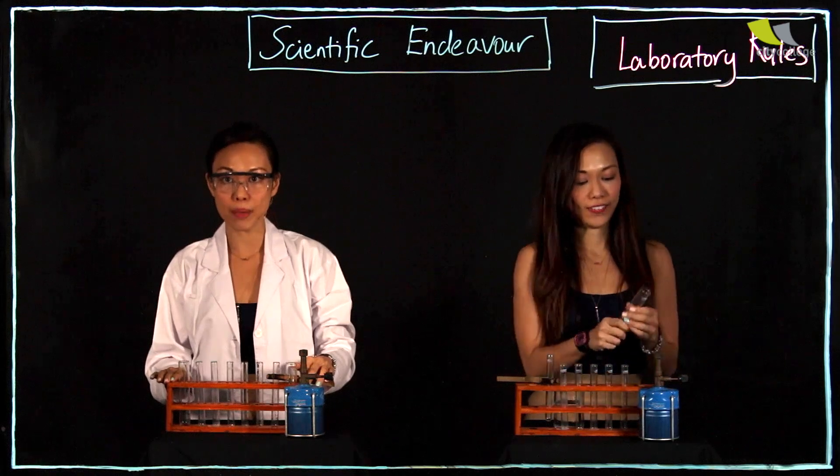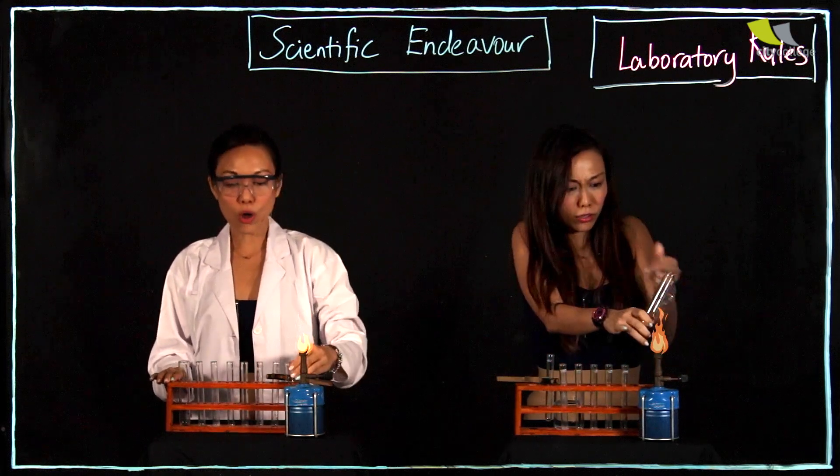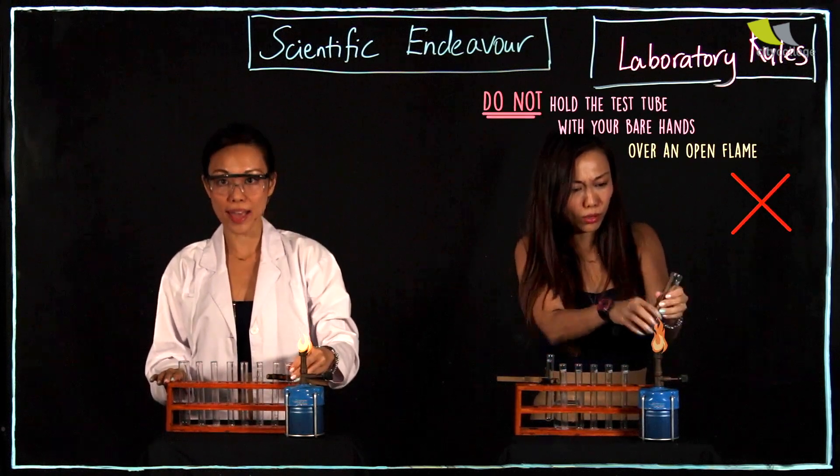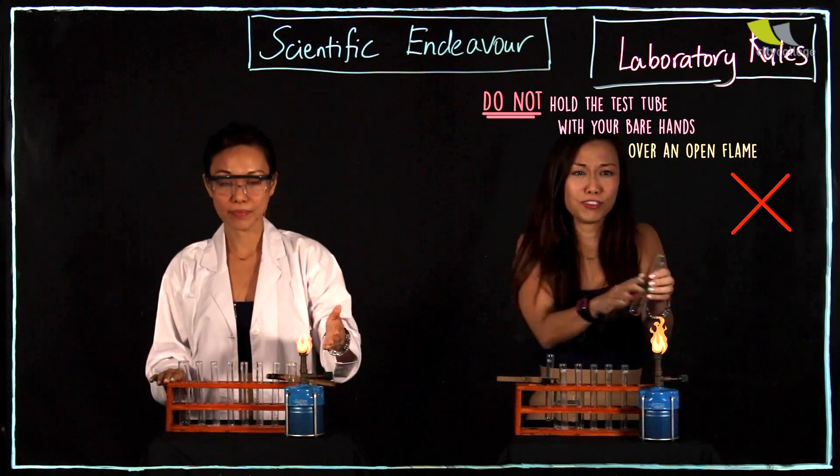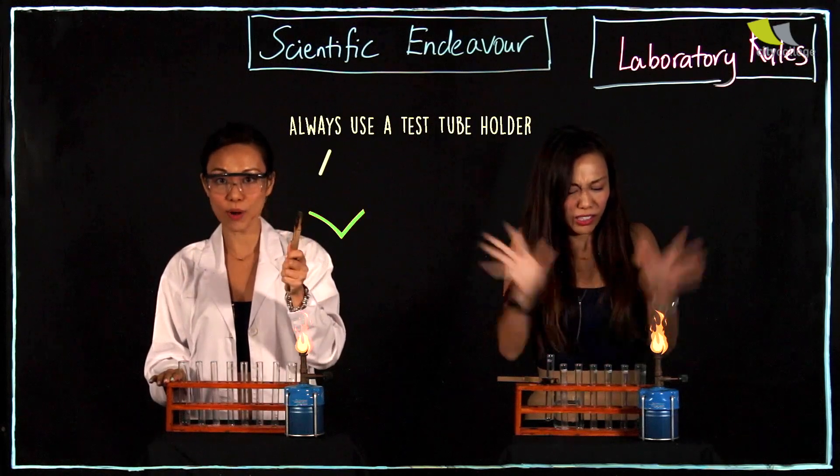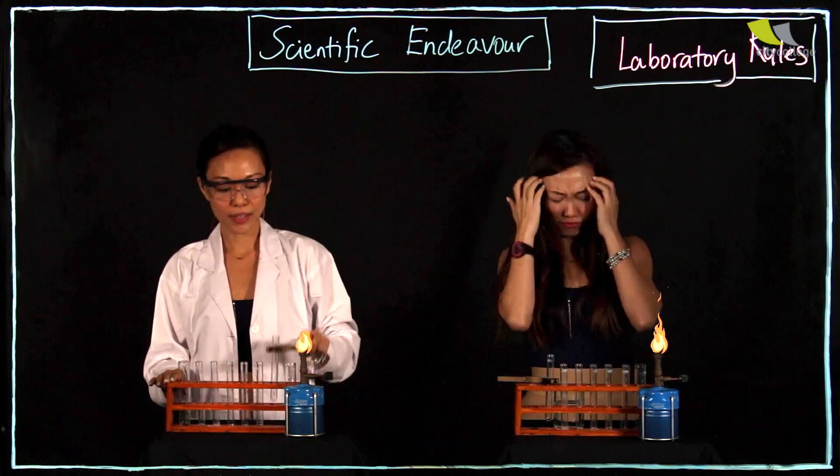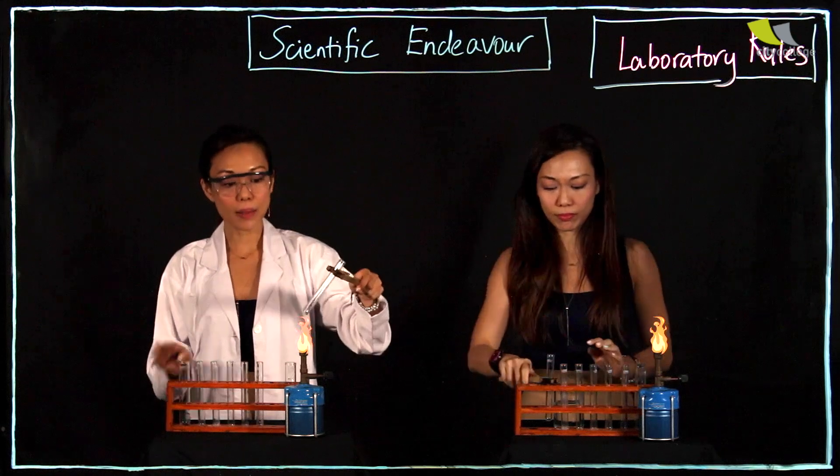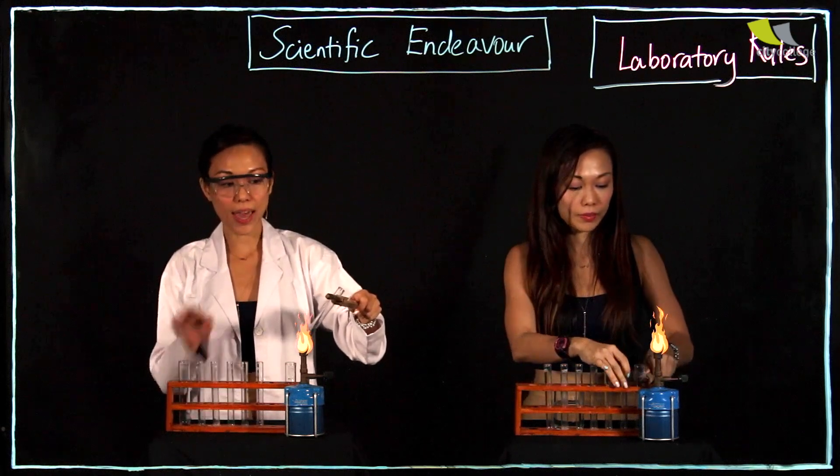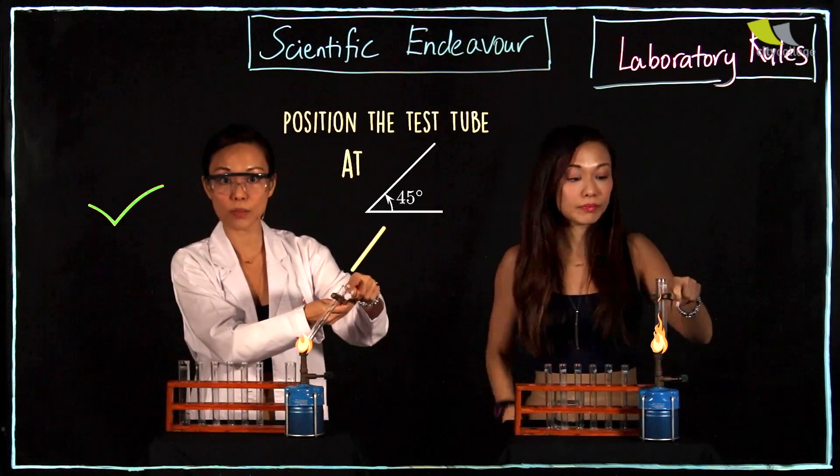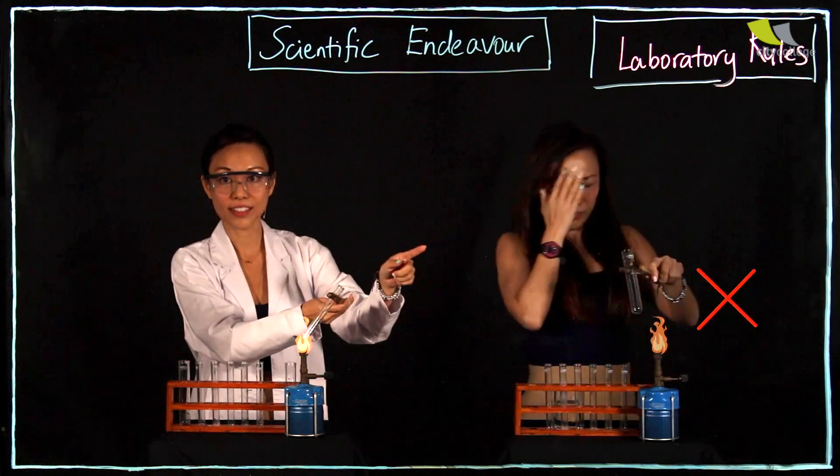Whenever you are doing heating, remember, do not hold the test tube with your hands over an open flame. Always use a test tube holder. And remember, place it at 45 degrees and ensure that the mouth of the test tube is not facing your friend or yourself.